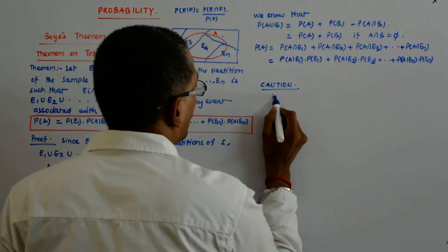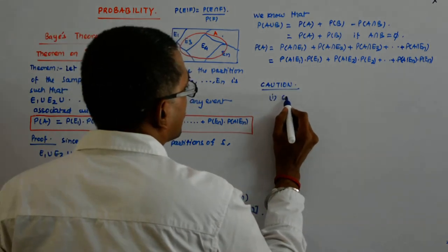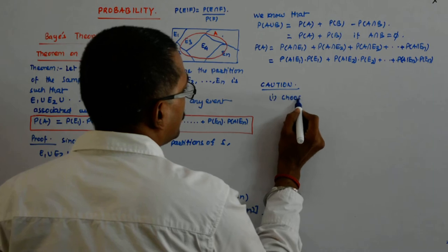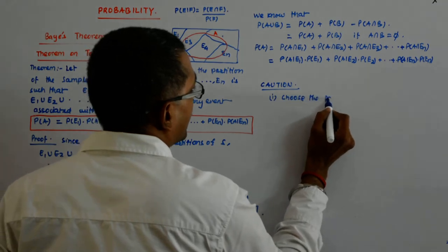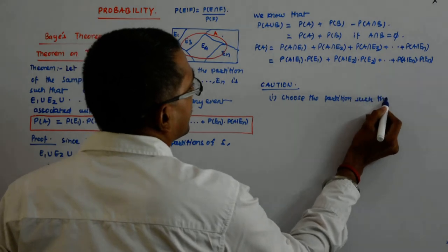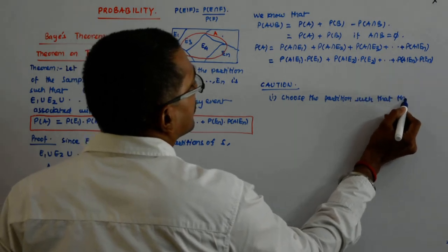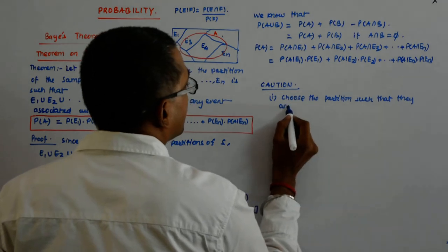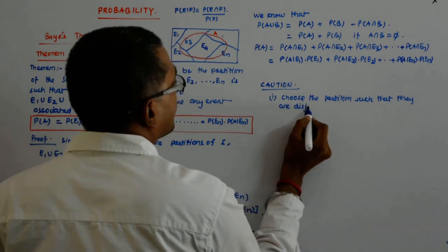Number one: choose the partition such that they are disjoint with each other.